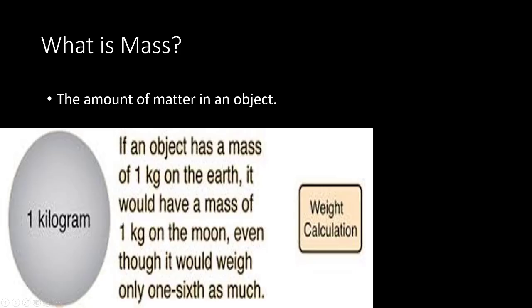So what is mass? Mass is the amount of matter in an object. If an object has a mass of one kilogram on the Earth, it would have a mass of one kilogram on the moon, even though it will weigh only one sixth as much. This means that your mass never changes — it doesn't matter if you're on Earth, the moon, Pluto, Venus, or Saturn. Your mass will stay the same, because the amount of matter in you never changes.